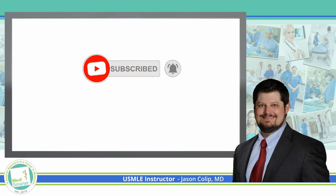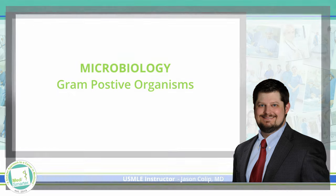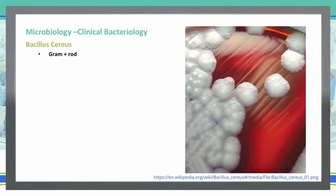Let's continue on with our discussion of gram-positive organisms. Today we're going to cover Bacillus cereus. Bacillus cereus is a gram-positive rod. As you can see here in this picture, these are colonies of Bacillus cereus that have been grown on a sheep blood agar plate.